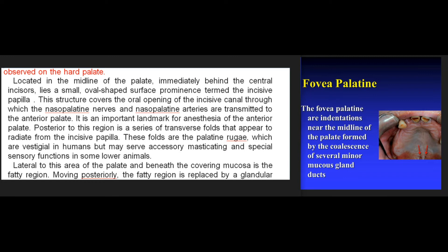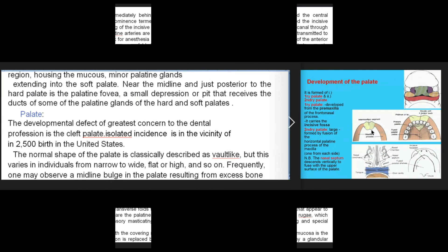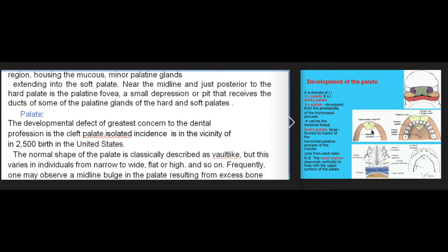The incisive papilla is an important landmark for anesthesia of the anterior palate. Posterior to this region is a series of transverse folds that appear to radiate from the incisive papilla; these folds are the palatine rugae, which are vestigial in humans but may serve accessory masticating and special sensory functions in some lower animals. Lateral to this area of the palate and beneath the covering mucosa is the fatty region; moving posteriorly, the fatty region is replaced by a glandular region housing the mucus minor palatine glands extending into the soft palate.